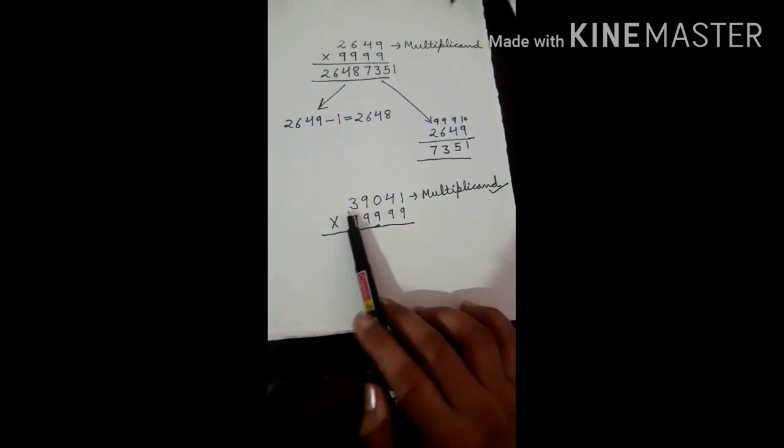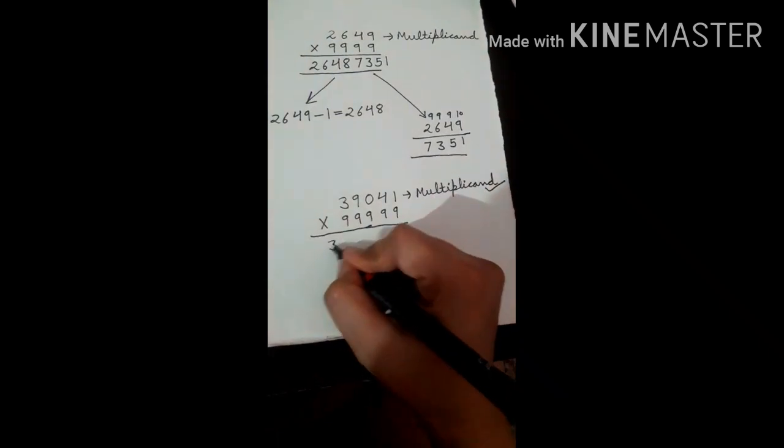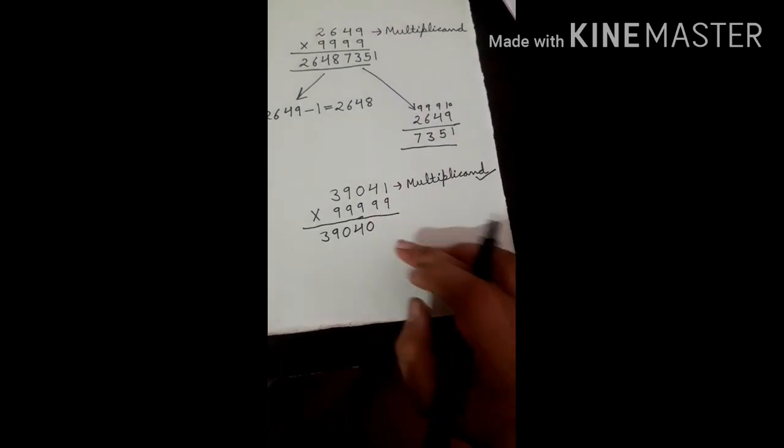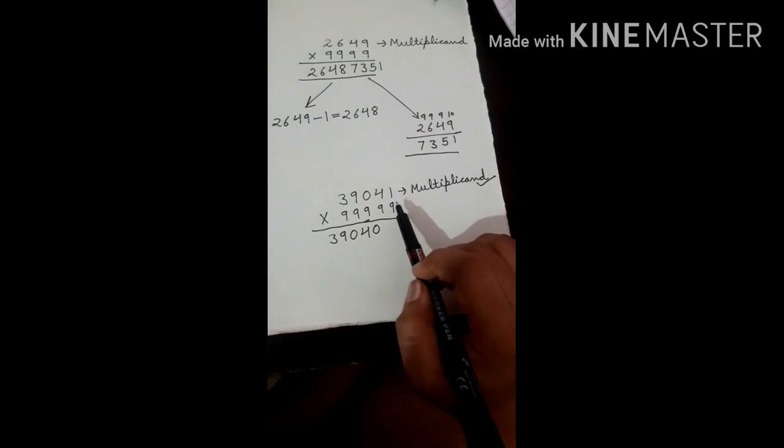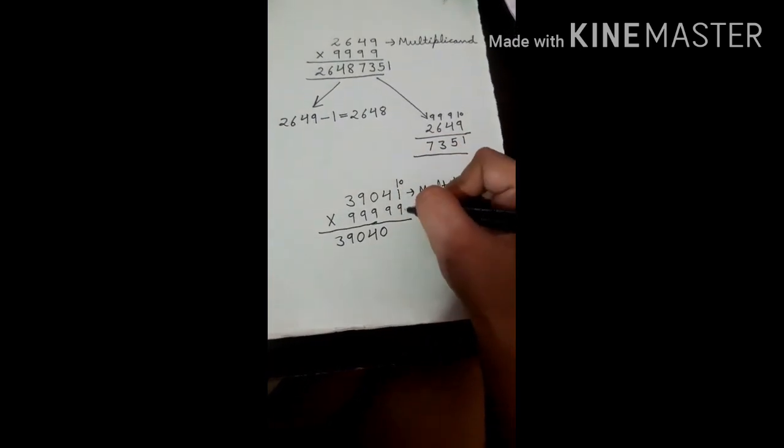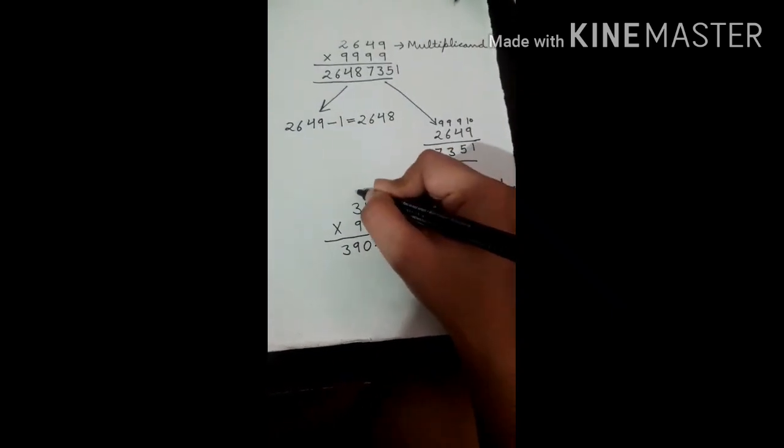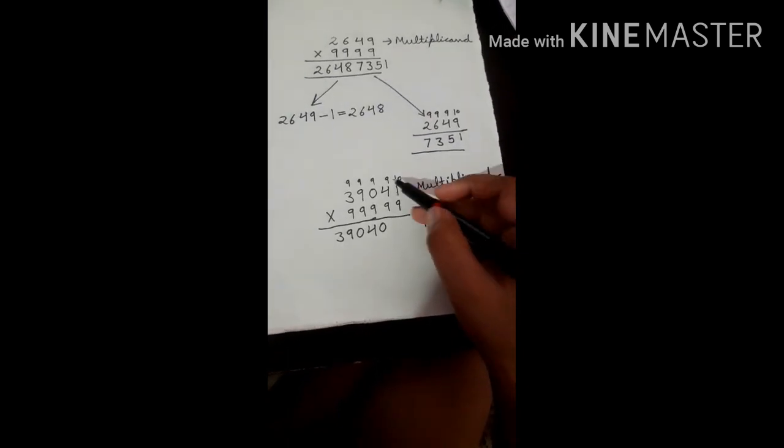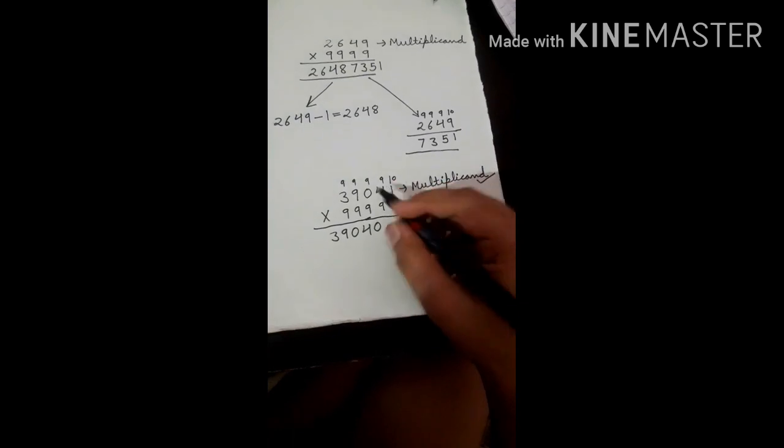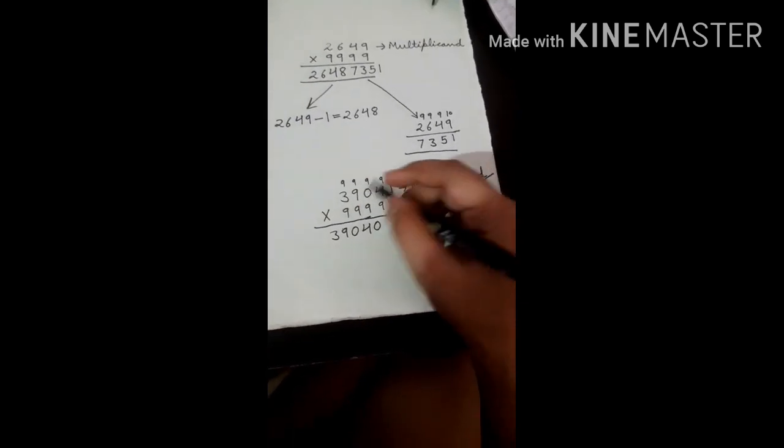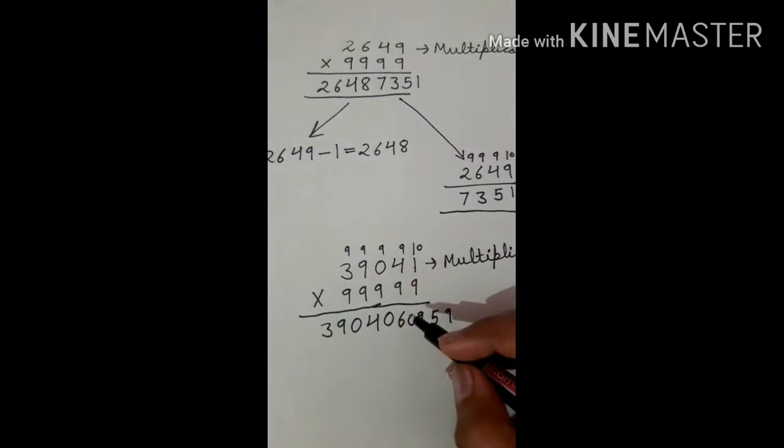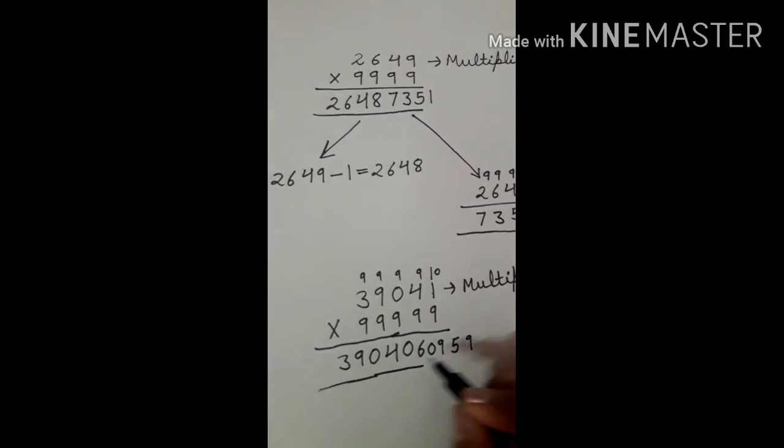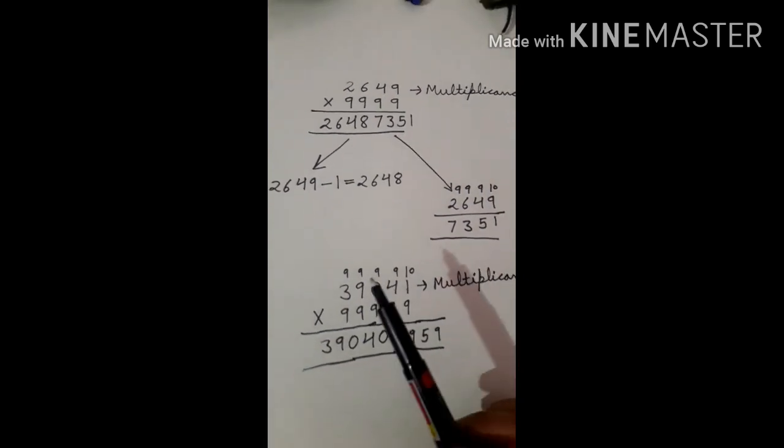39041 minus 1, as I have told you that you have to minus 1 from the multiplicand: 39041 minus 1 is 39040. Now, you will minus the last from 10 and others from 9: 10 minus 1 is 9, 9 minus 4 is 5, 9 minus 0 is 9, 9 minus 9 is 0, 9 minus 3 is 6. See how easily you can do it directly in your mind without using pen and paper.